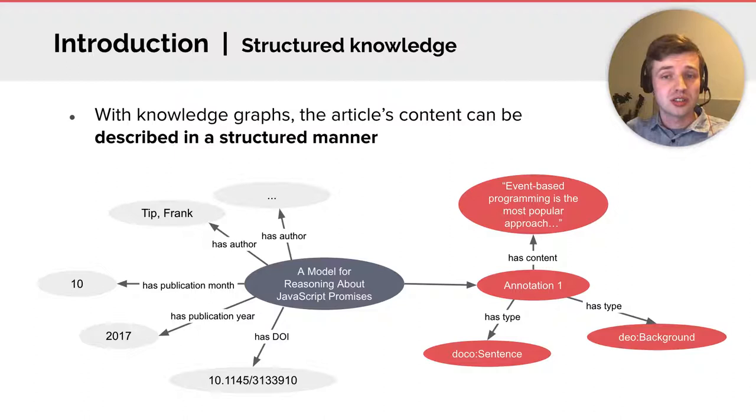When knowledge graphs are used, it is possible to create paper descriptions that can be understood by machines. This makes it possible for machines to understand the semantics or the meanings of the article. And for example, provide the ability to have better support for finding articles.